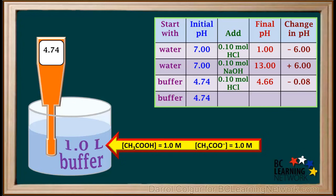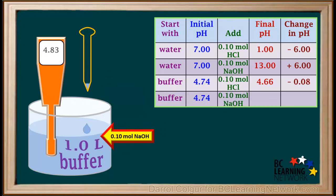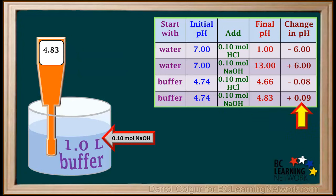Now we'll go back and start again with our buffer solution that has an initial pH of 4.74. This time, we'll add 0.1 mol of the strong base NaOH to 1 liter of this buffer solution. As a result of adding the base, the pH rose slightly to a final value of 4.83. The pH started at 4.74 and rose to 4.83, so that is an increase of only 0.09, which is a very small increase. Compare this with an increase of 6 whole pH units when NaOH was added to pure unbuffered water.